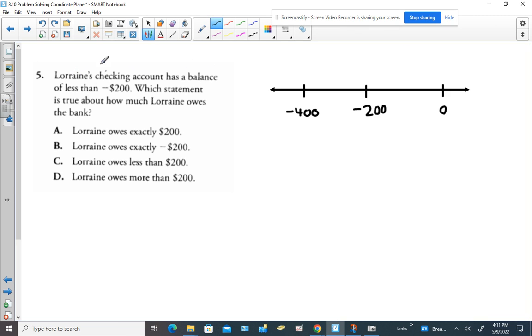Lorraine's checking account has a balance of less than negative $200, so I think it's a good idea to plot a hypothetical value that would be less than negative $200.